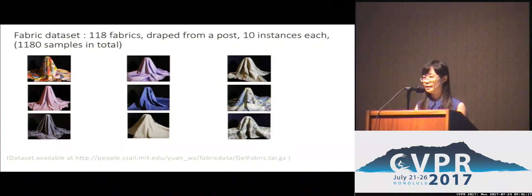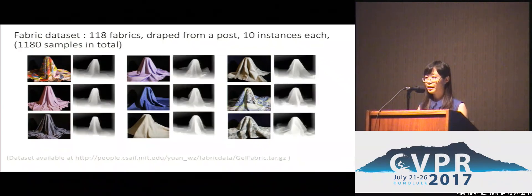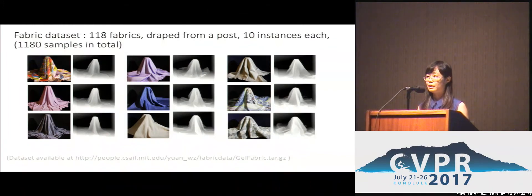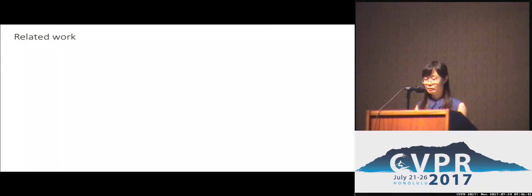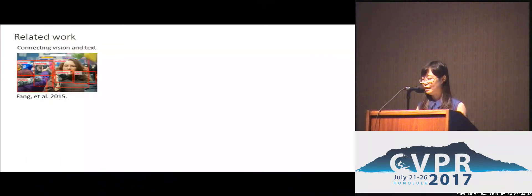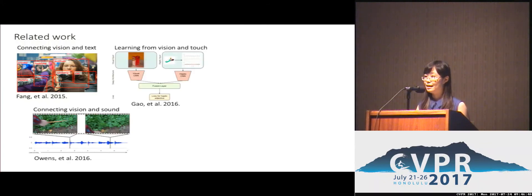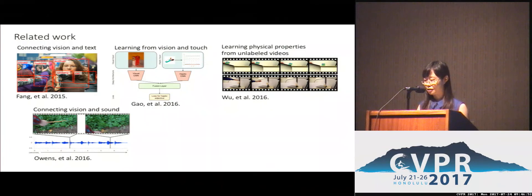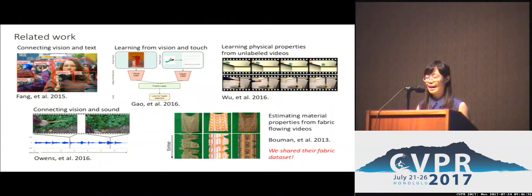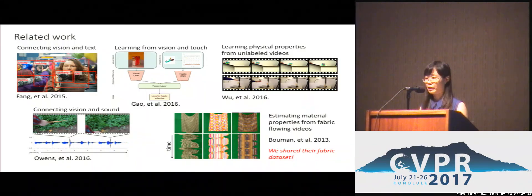To do this project, we collected a fabric dataset of 118 fabrics with a large variance in mechanical properties, though some are very similar. We draped the fabrics from the post 10 times and gathered color images and depth images. We also pressed the GelSight sensor on them multiple times. There has been related work on cross-modal learning, including connecting vision with text, sound, and touch, as well as studying mechanical properties of rigid objects and fabric properties from video. We also thank Dr. Bowman for sharing her fabric dataset.